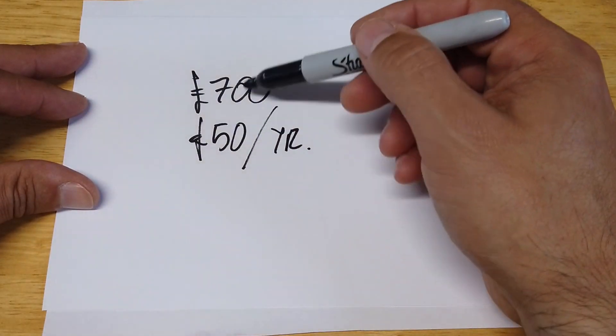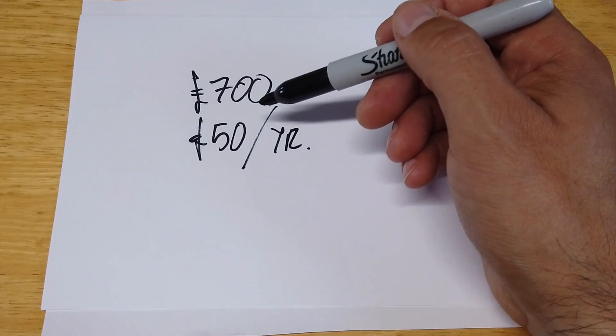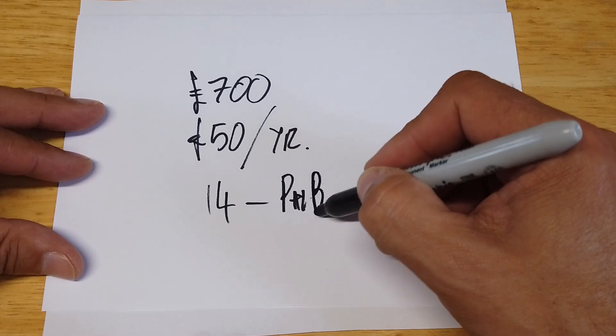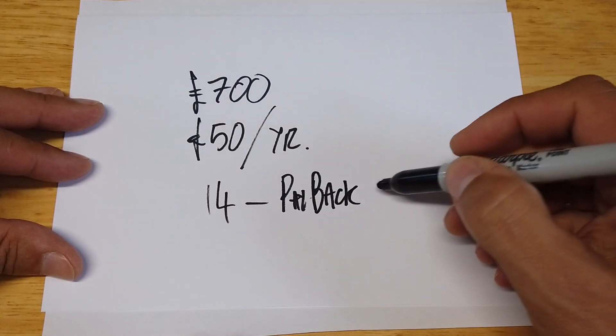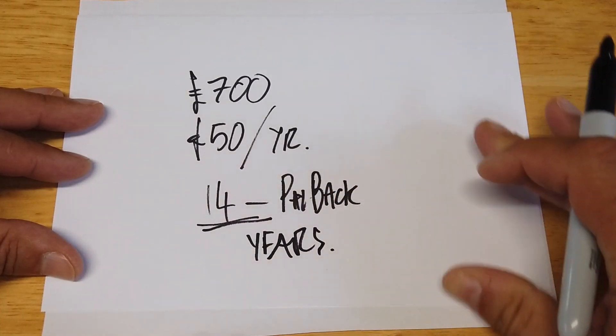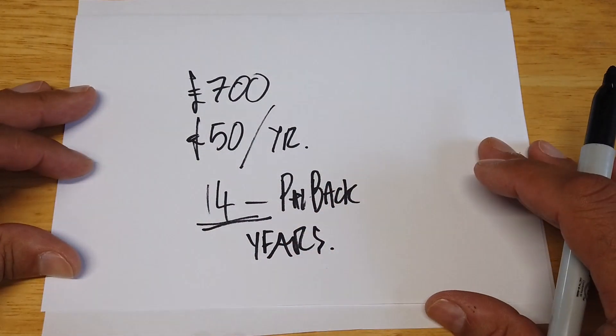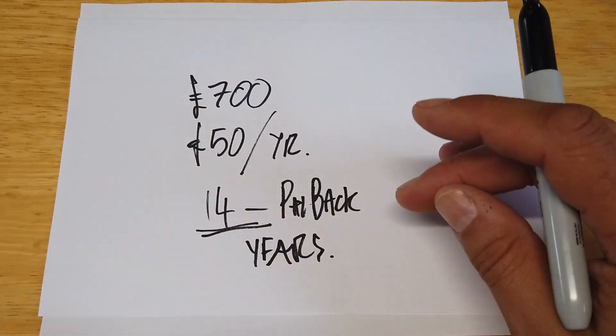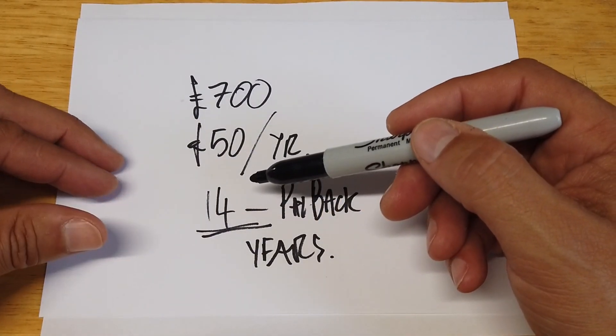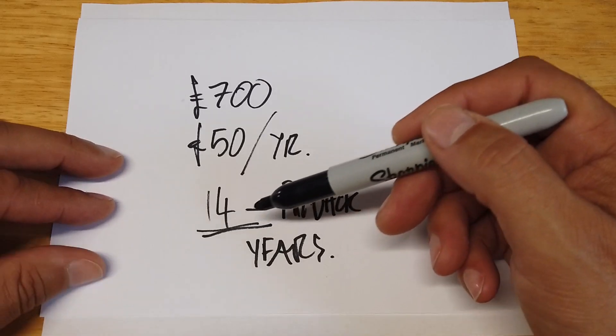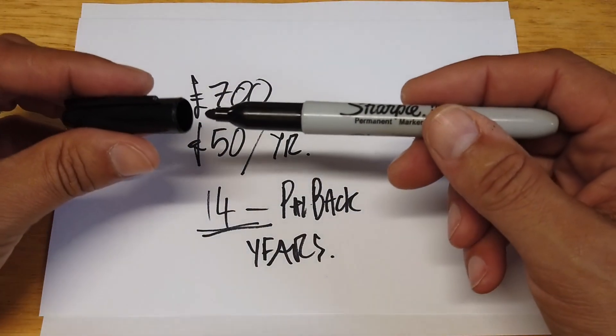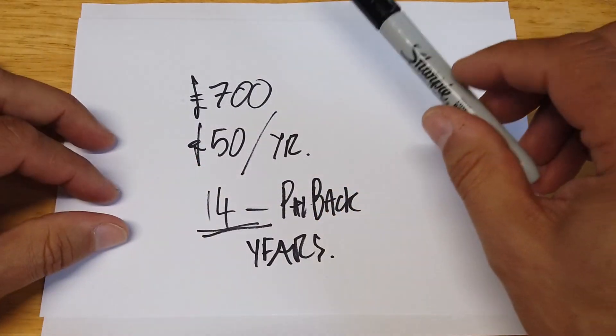Which ultimately means that if we divide 700 by 50, the payback on this is 14 years. 14 years before this pays you back for the investment. That is assuming that the solar panels last for 14 years, the inverter lasts for 14 years, the batteries last for 14 years. This is the reason why I said it doesn't make sense to do it.